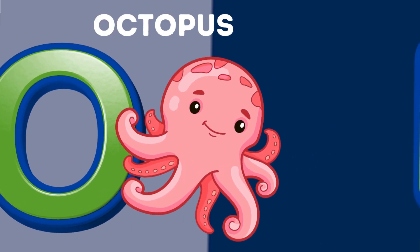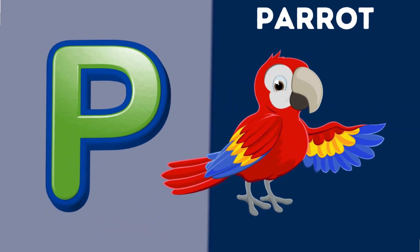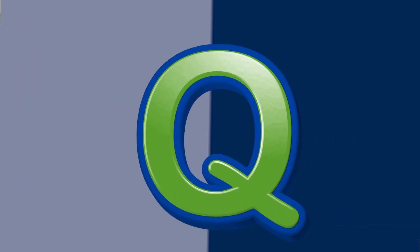O is for Octopus. A, A. Octopus. P is for Parrot. Pa, Pa. Parrot.